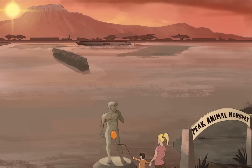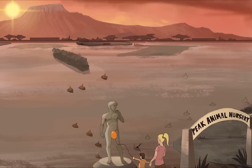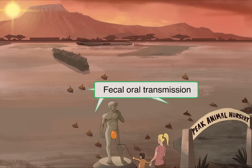Now, how is this virus transmitted? Picornaviruses are, for the most part, transmitted through the fecal-oral route — the virus is shed in feces, which ends up in food and water, or on the hands of dirty little children, and then gets introduced into the mouth. To illustrate fecal-oral transmission, we've drawn piles of poop scattered around the scene. The exception to this is the rhinovirus, which is transmitted through the respiratory system — I'll discuss this in the rhinovirus video.